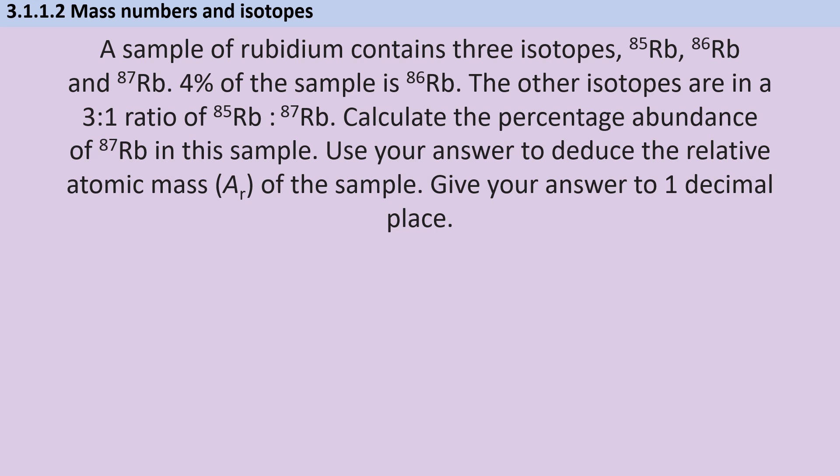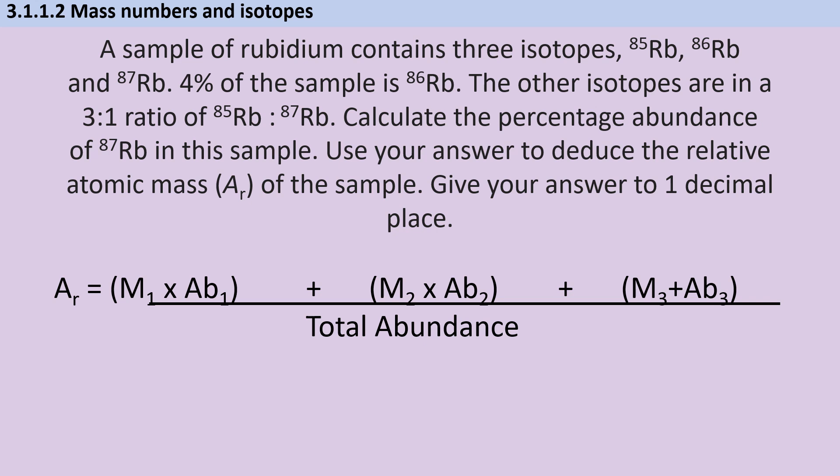So the first thing that I'm going to do is to write out an equation that uses the masses and the abundances. Since I know here that I'm working with percentage abundance data, all of my abundances are going to add up to be 100%. Next, I'm going to substitute in the other information I have. So that's the masses of the three isotopes and the fact that I've got 4% of this isotope 86. Now I need to include the abundances of the other two. So I've been told that they're in a three to one ratio of 85 to 87. So I'm going to make 87x and I'm going to make 85 3x.